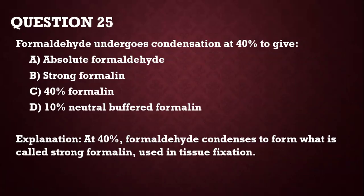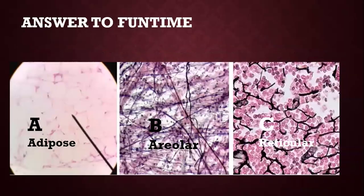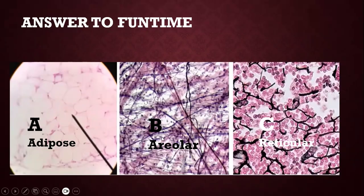Question number 25: formaldehyde undergoes condensation at 40% to give strong formalin, and that strong formalin is used in tissue fixation. Now for the fun time answers: you can see the tissues here — looking like honeycomb structures, this is adipose tissue, with fat cells that have been emptied out and stained. This is areolar tissue, and this is reticular tissue. To help identify these tissues, look at the connective tissue and the direction the connective tissue is taking.